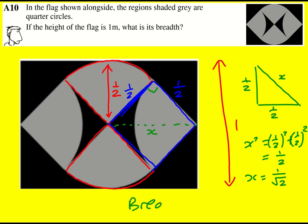And therefore the breadth is two lots of one over root two or two over root two, and that simplifies to root two.